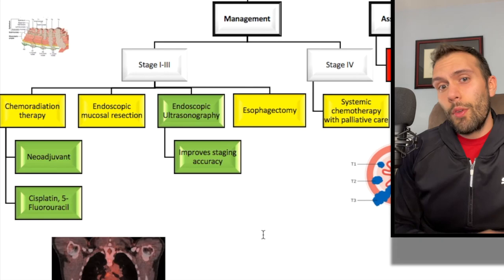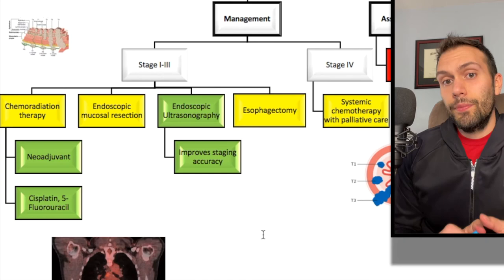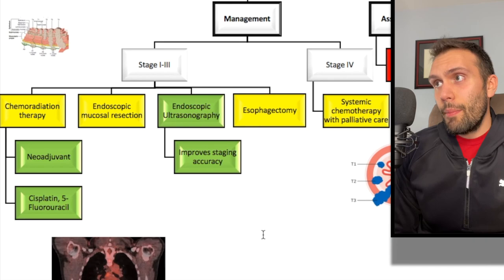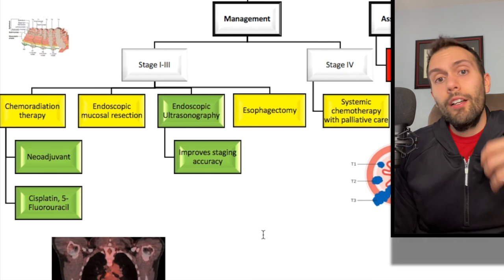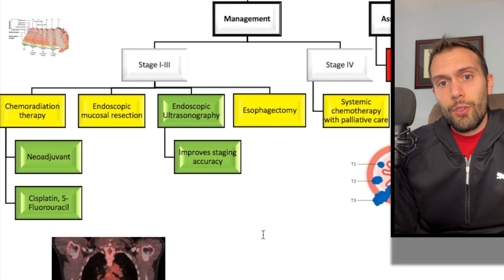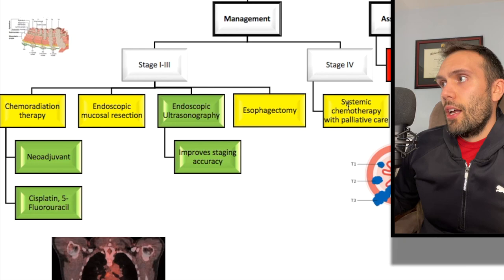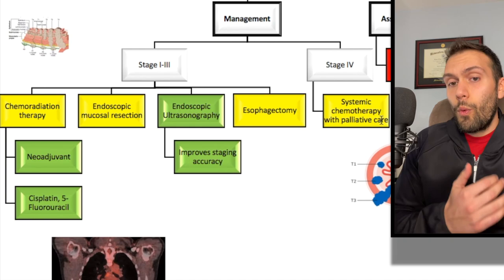For esophagectomy to be considered, the patient cannot have metastases — that would be stage four. There also can't be invasion of nearby structures like the trachea seen on CT scan. The patient must be a good surgical candidate without severe heart failure or COPD. For stage four with metastatic spread — for example liver and brain mets — management is systemic chemotherapy with palliative care, or just palliative care depending on extent of metastasis.